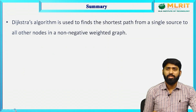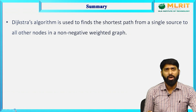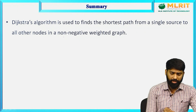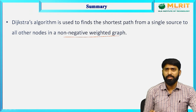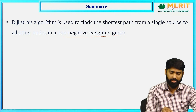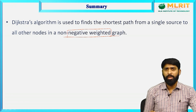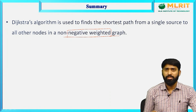Summary of the session: we learned Dijkstra's algorithm, which is used to find the shortest path from a single source to all other nodes in a non-negative weighted graph. The time complexity can be high for dense graphs with many edges. In the next class, we will see how to find the shortest path in a graph with negative weights using the Bellman-Ford algorithm, which handles graphs with negative weights. If you have any doubts, ask your questions in the comment section. Thank you.